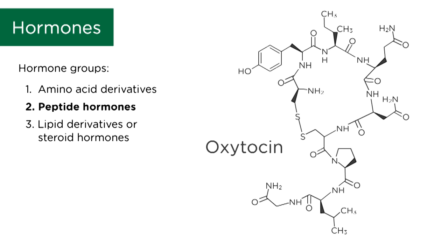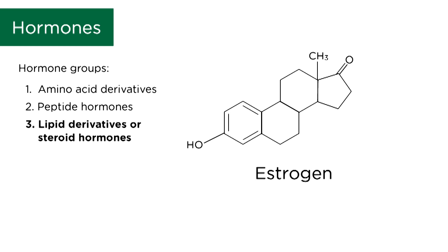Lipid derivatives or steroid hormones are considered lipophilic, meaning they have an affinity for lipid structures, which we'll take a look at shortly. They circulate in the blood bound to carrier proteins, so they usually last in the circulation longer than other types of hormones.